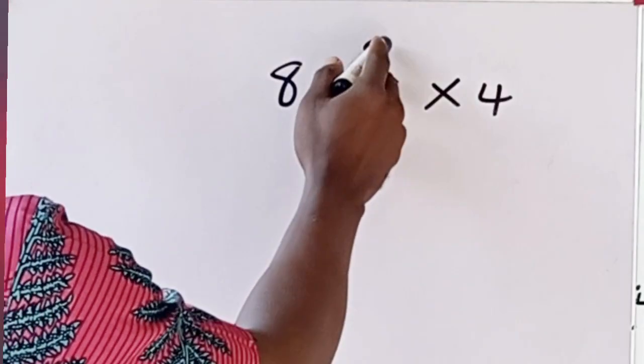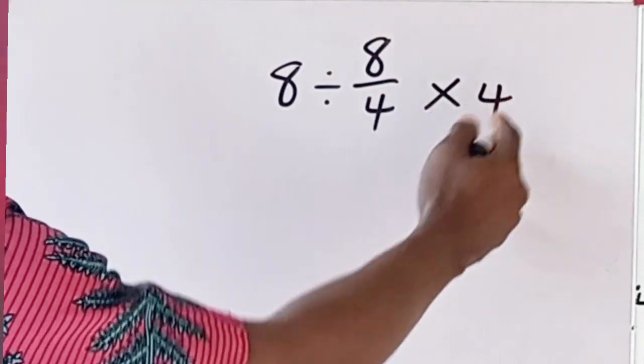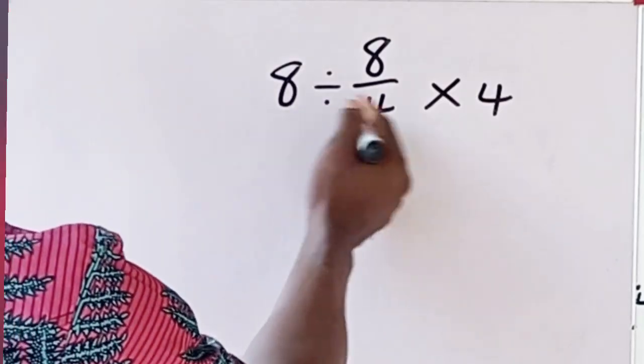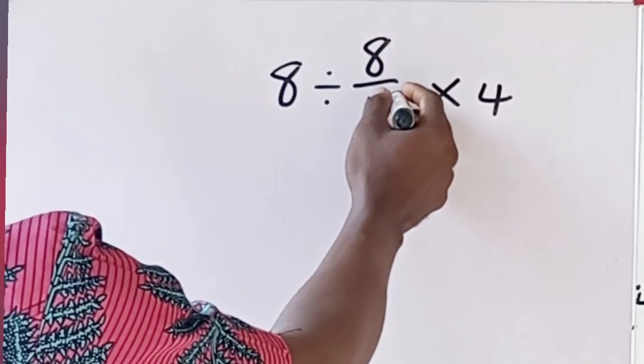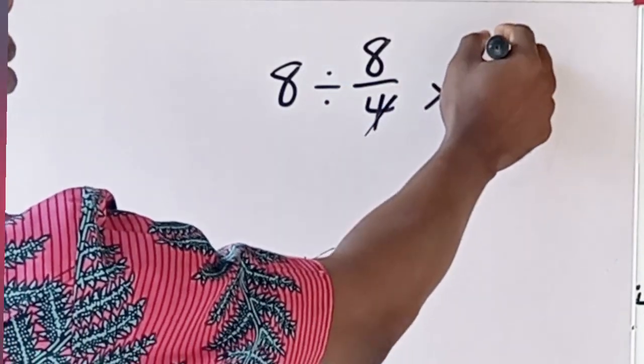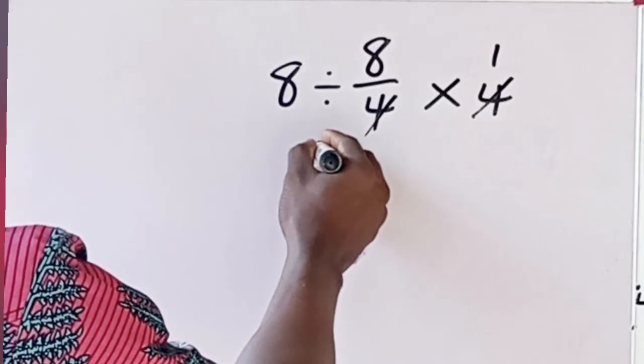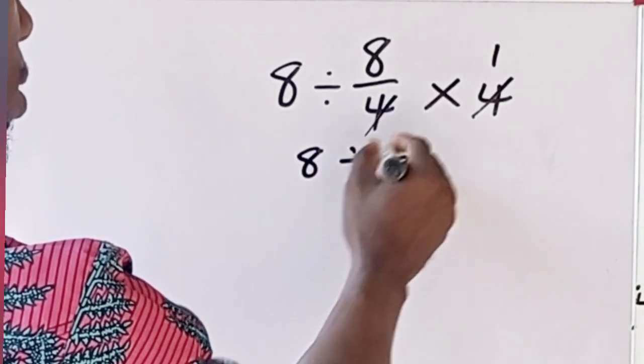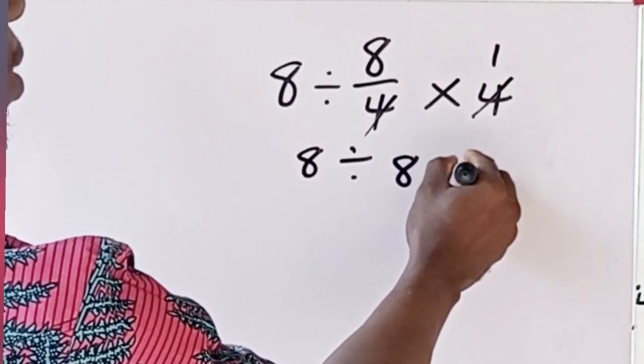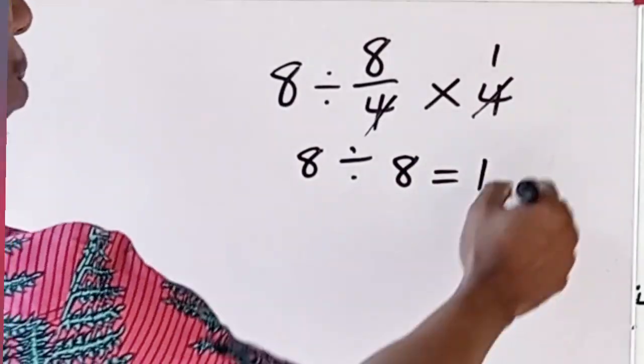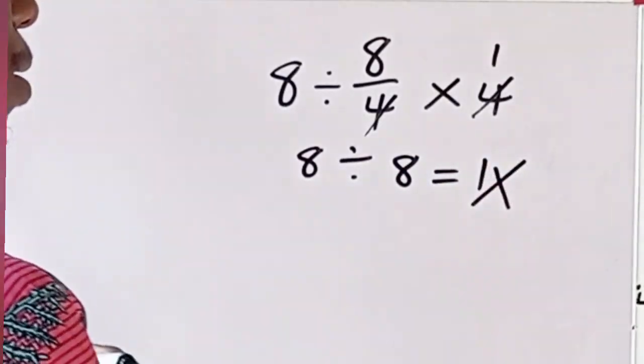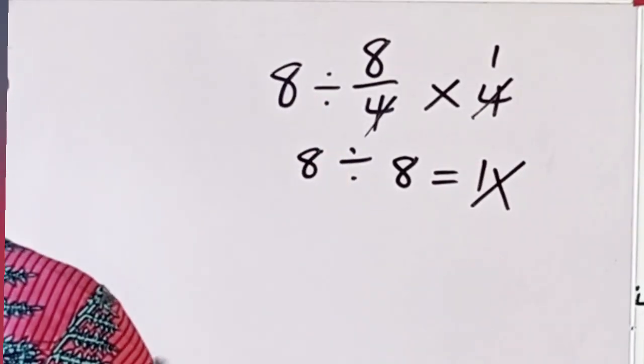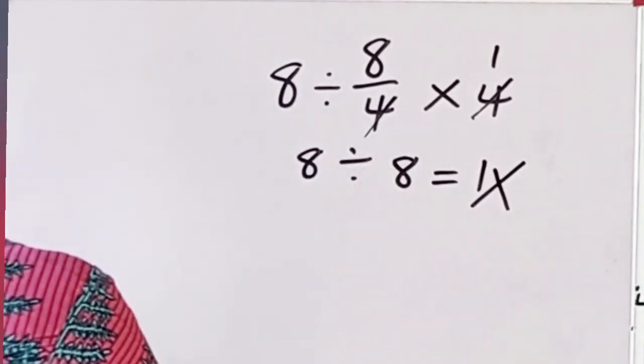8 divided by 8 over 4 times 4. Now, 8 divided by 4, we can do this - cancel this 4, which is 1, so we are left with 8 divided by 8. 8 divided by 8 will give us 1. But this answer is very wrong. Why? Because we have omitted a rule called order of operation.